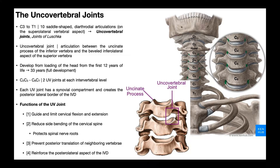Below that we have C4, C5, C6, C7, and then T1. We can tell this is T1 because here's the first rib attaching on that facet on T1. You can actually see the first rib right here, and then this one would be T2.